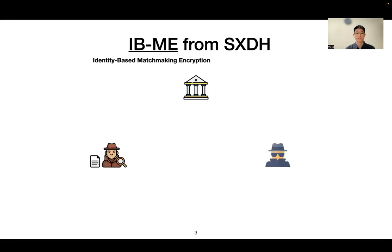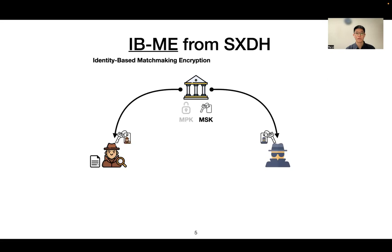Here are an authority, a sender, and a receiver. The authority first initializes the system and produces the master public key MPK and the master secret key MSK. It uses the MSK to generate the sender's and the receiver's secret keys with their identities respectively.